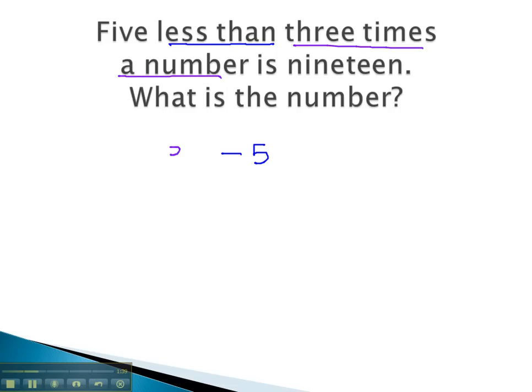We don't know what that number is, so we simply will make that number x. Next, we see this is 19. Is, we know translates to an equal sign. Equals 19. We now have the equation 3x minus 5 equals 19.